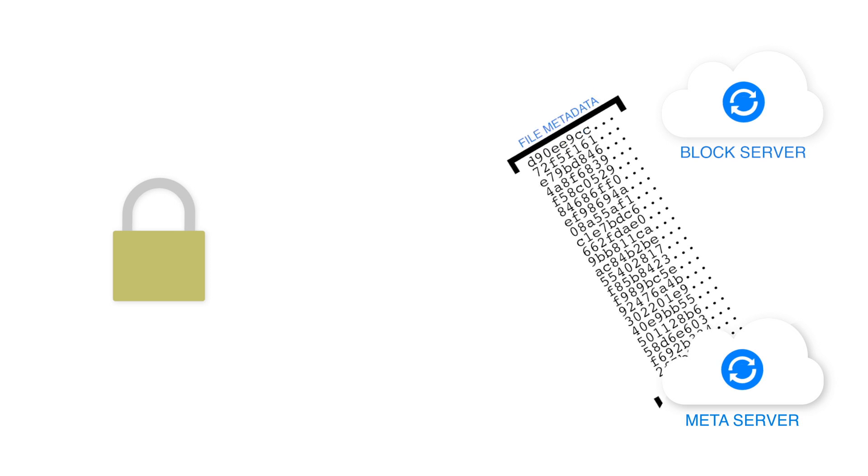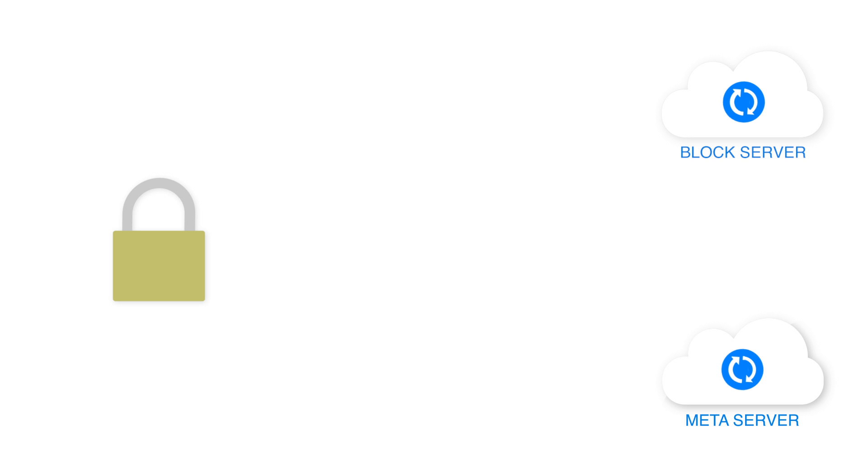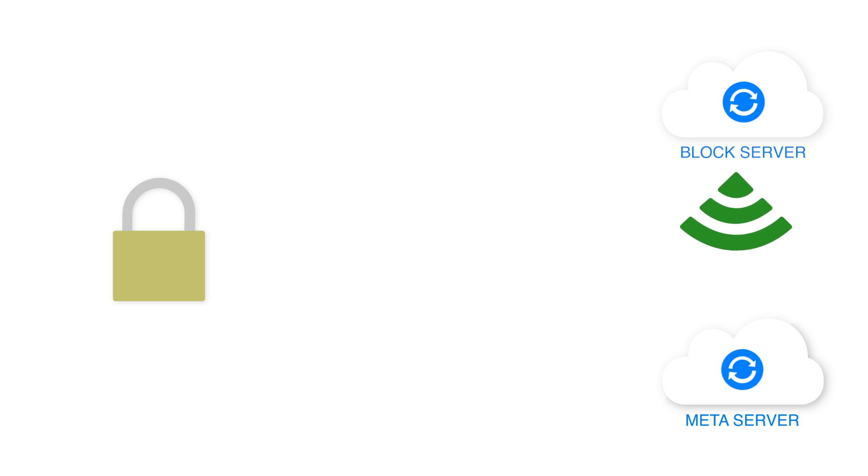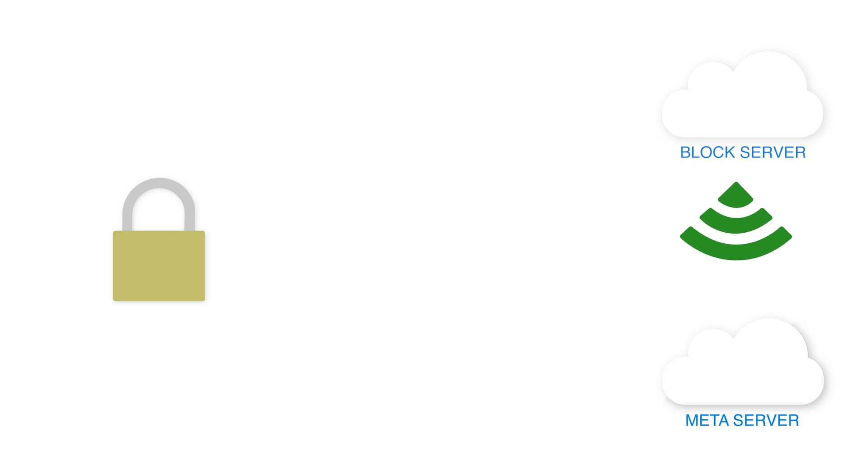What we then do is tell another server in our system — what we call the meta server or metadata server — that this is a file composed of the following list of blocks. We pass up the hashes to identify those blocks rather than re-uploading the whole block. The meta server then checks with the block server to make sure the blocks are there.